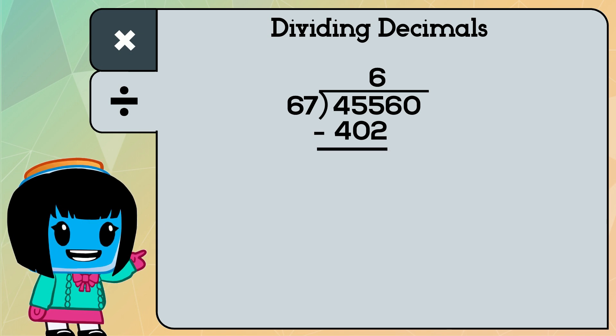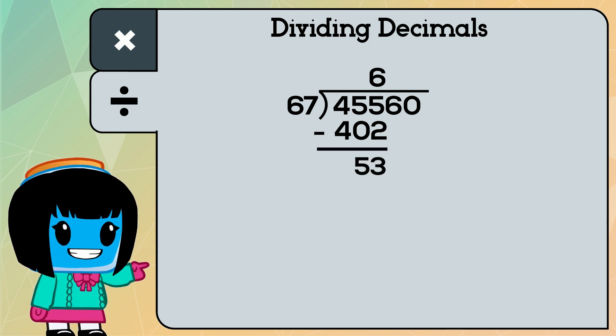We'll then follow the division algorithm and divide, multiply, subtract, then bring down until we have no digits left.